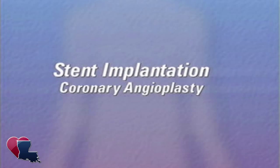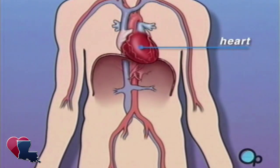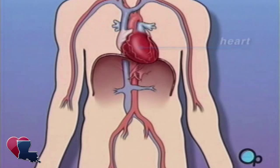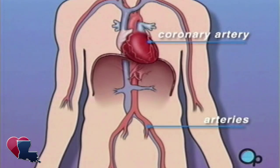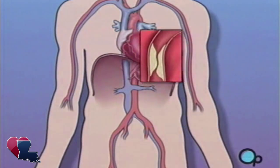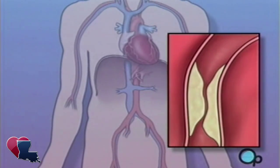Your doctor has recommended that you undergo a balloon angioplasty with a stent implant. But what does that actually mean? The heart is located in the center of the chest. Its job is to keep blood continually circulating throughout the body. The blood vessels that supply the body with oxygen-rich blood are called arteries. The arteries that supply blood to the heart muscle itself are called coronary arteries. Sometimes these blood vessels can narrow or become blocked by plaque deposits, restricting normal blood flow.